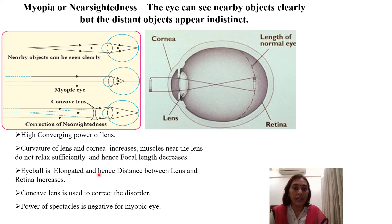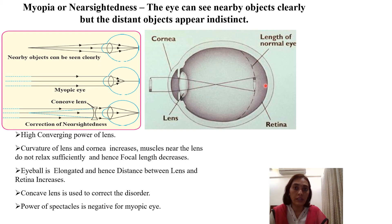Another cause is that the eyeball becomes elongated, increasing the distance between the lens and the retina. In the diagram, the dotted line shows the normal eye shape, but due to elongation of the eyeball the retina has shifted further back. This increase in the distance between lens and retina due to the change in the shape of the eyeball also introduces this disorder.